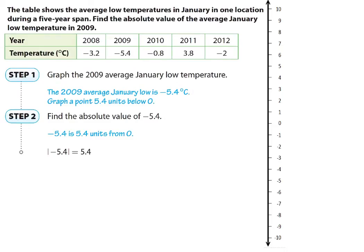Our next example deals with identifying the absolute value of a rational number. When you're talking about absolute value, you're talking about distance from zero on the number line. This example, I think, moves up to page 58 in your textbook. It says the table shows the average low temperatures in January for one location during a five-year span. Find the absolute value of the average January low temperature in 2009. The table indicates the years, and in 2009 we want to graph the absolute value of this number.